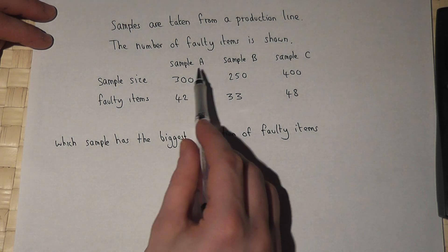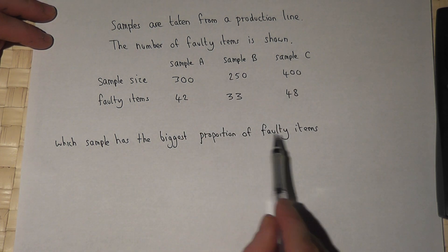The question is, which sample—A, B, or C—has the biggest proportion of faulty items?